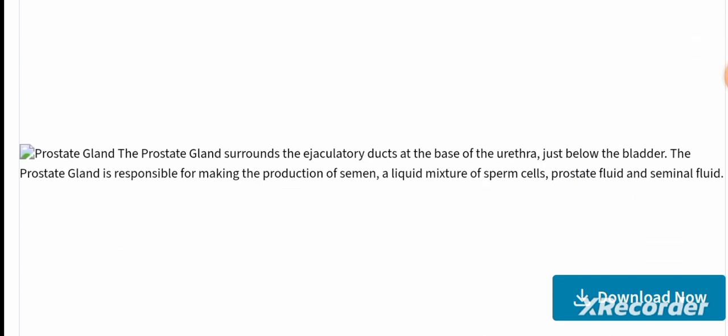The prostate gland surrounds the ejaculatory duct at the base of the urethra, just below the bladder. It is responsible for the production of semen, a liquid mixture of sperm cells, prostate fluid, and seminal fluid. This is the composition of semen.